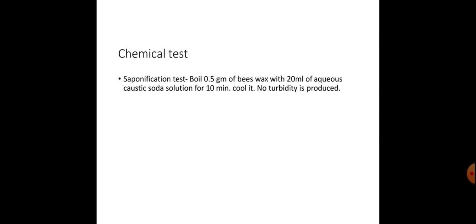Chemical test — Saponification test. Boil 0.5 gram of beeswax with 20 ml aqueous caustic soda solution for 10 minutes. Cool it. No turbidity is produced. This confirms beeswax.